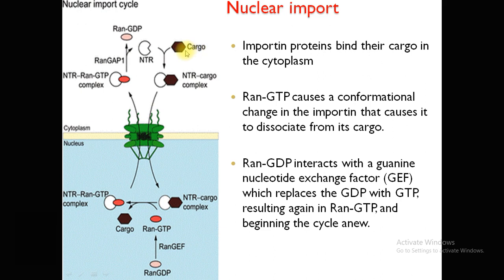In nuclear import, the NTR or nuclear transport receptor combines with the cargo protein in the cytoplasm. Cargo proteins carry transport motifs that enable their interaction with different complexes, moving dynamically between compartments within the secretory and endocytic pathways. After this, the complex is able to interact with the nuclear pore complex and pass through its channel into the nucleus.